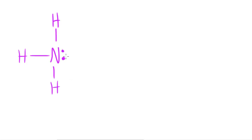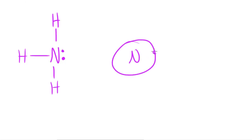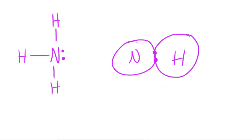The way it accepts the proton is by donating a lone pair of electrons. If I represent this nitrogen with a circle, what will happen is the H+ ion will come along and the electrons will be donated to the H+ ion. The nitrogen doesn't actually let go of them — it's basically saying to the hydrogen: come over here and we'll share.